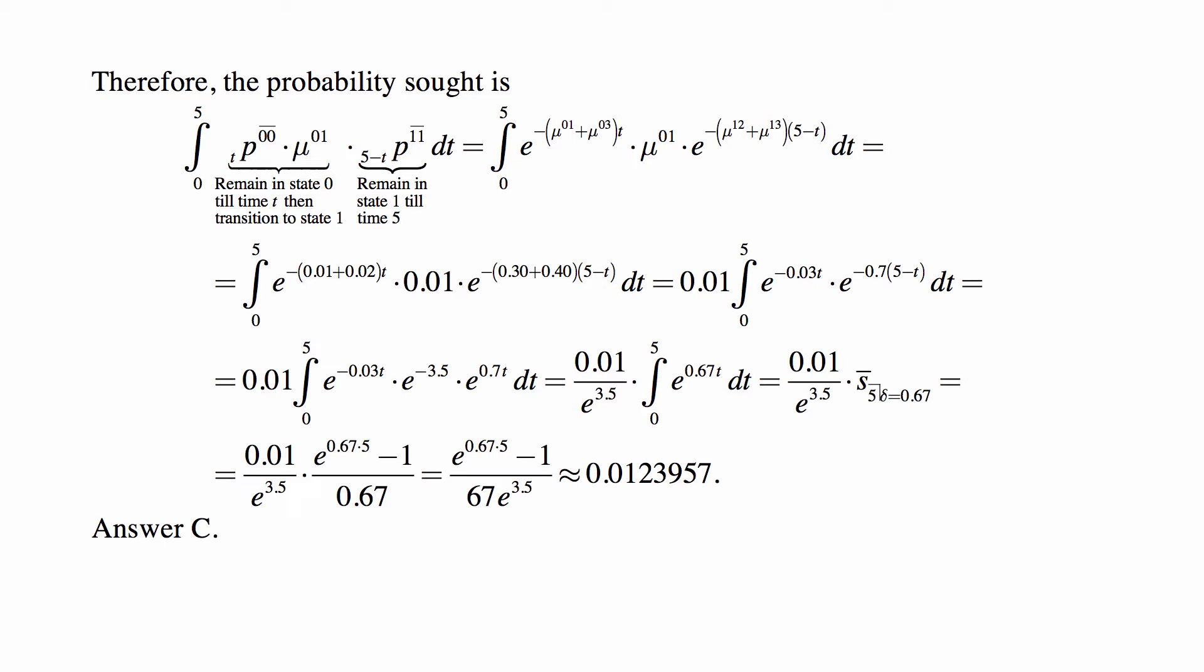So we just use the formula we know from exam FM. And yes, you should know the stuff on exam FM when you take exam MLC. Okay, so we just have 0.01 over e to the 3.5 times e to the 0.67 times 5 minus 1. You know, it's the same as 1 plus i to the nth minus 1 over delta. Delta is 0.67 in this.